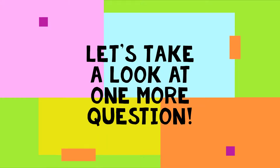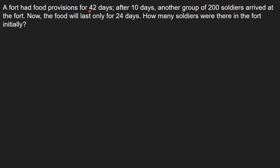Let's take a look at one more question — this one is a bit hard. A fort had food provisions for 42 days. After 10 days, another group of 200 soldiers arrived at the fort, and now the food will last only for 24 days. How many soldiers were there in the fort initially? This means the food that should have lasted for 32 more days would now last only 24 days, since 200 more soldiers have arrived.